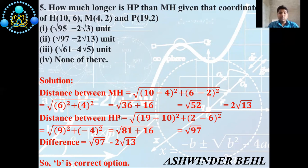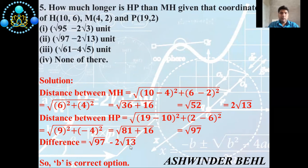Now we find the distance HP: √[(19 − 10)² + (2 − 6)²]. So 19 − 10 = 9 and 2 − 6 = −4. Then 9² = 81 and (−4)² = 16. So 81 + 16 = 97, giving √97. Since 97 is a prime number, it cannot be simplified. The difference HP − MH = √97 − 2√13, so option B is the correct answer. Thank you everyone.